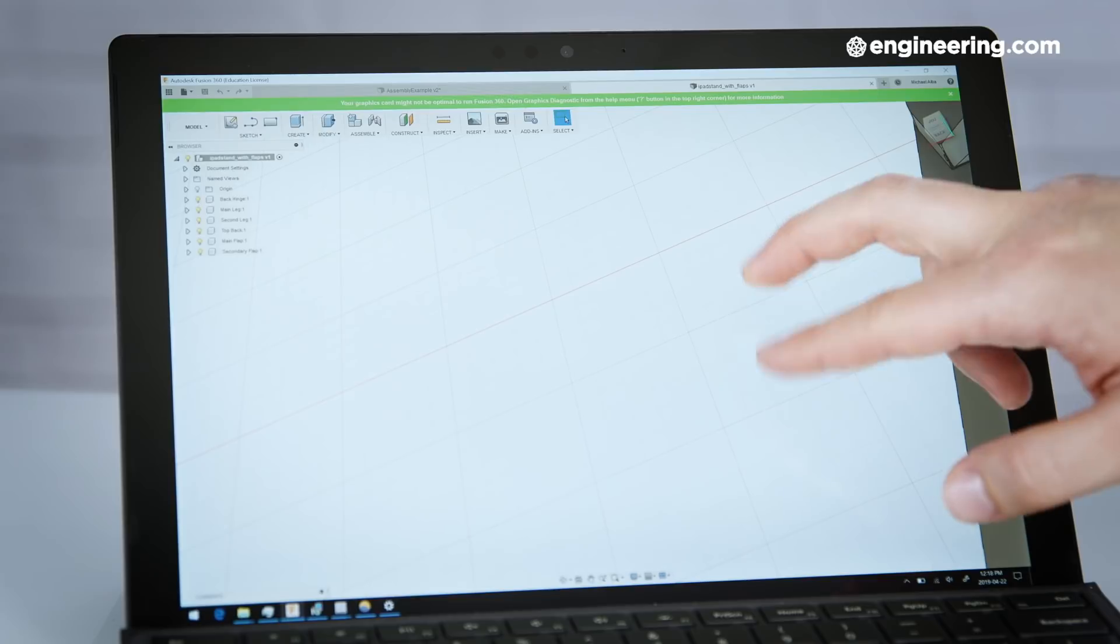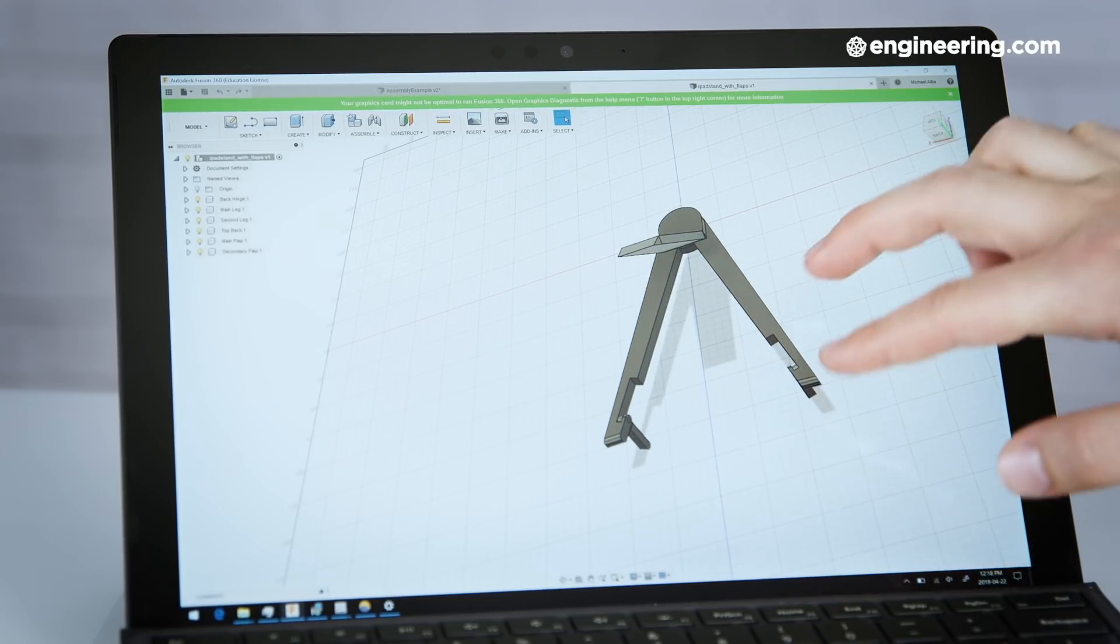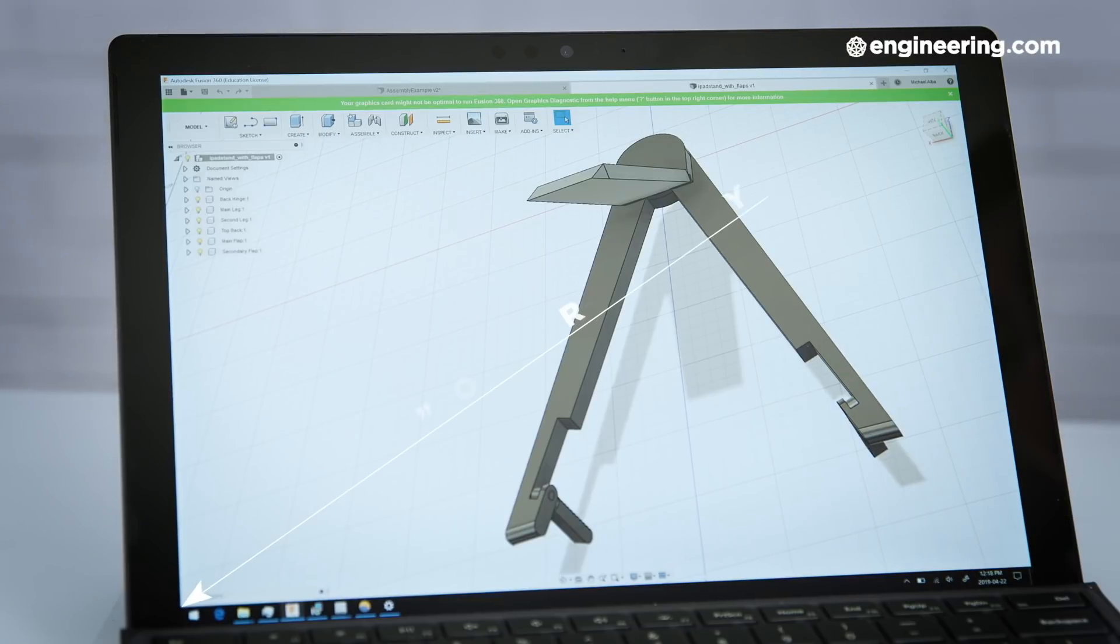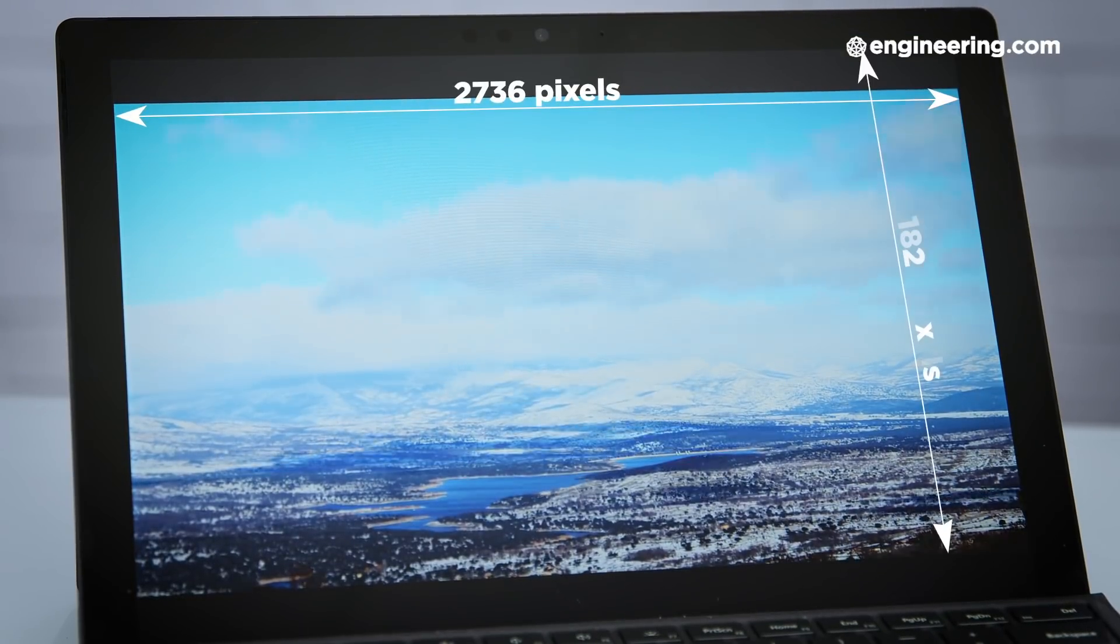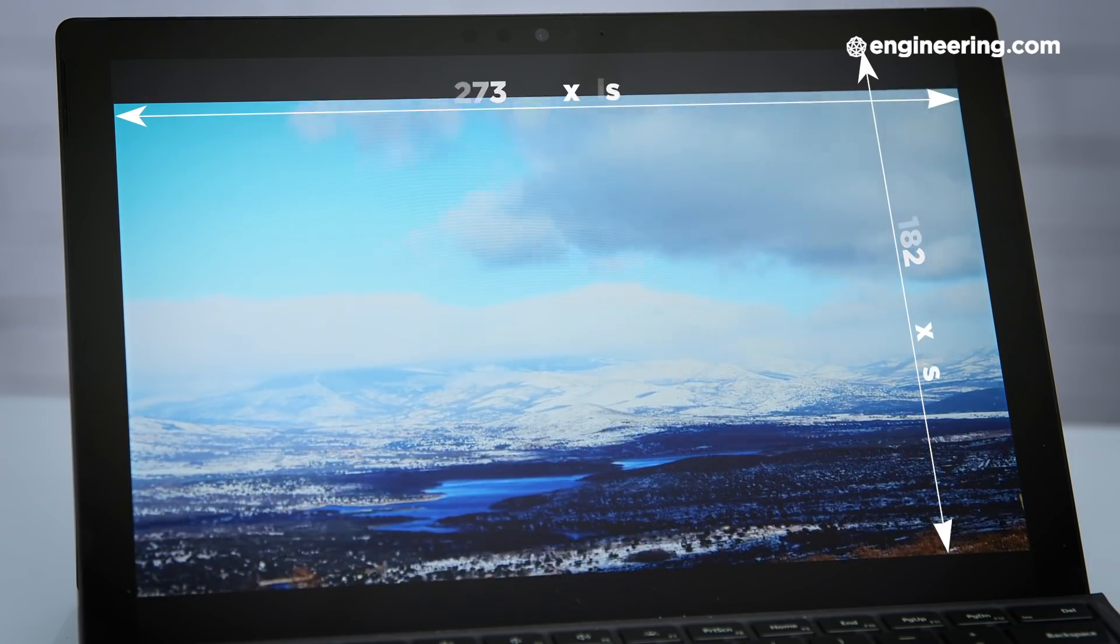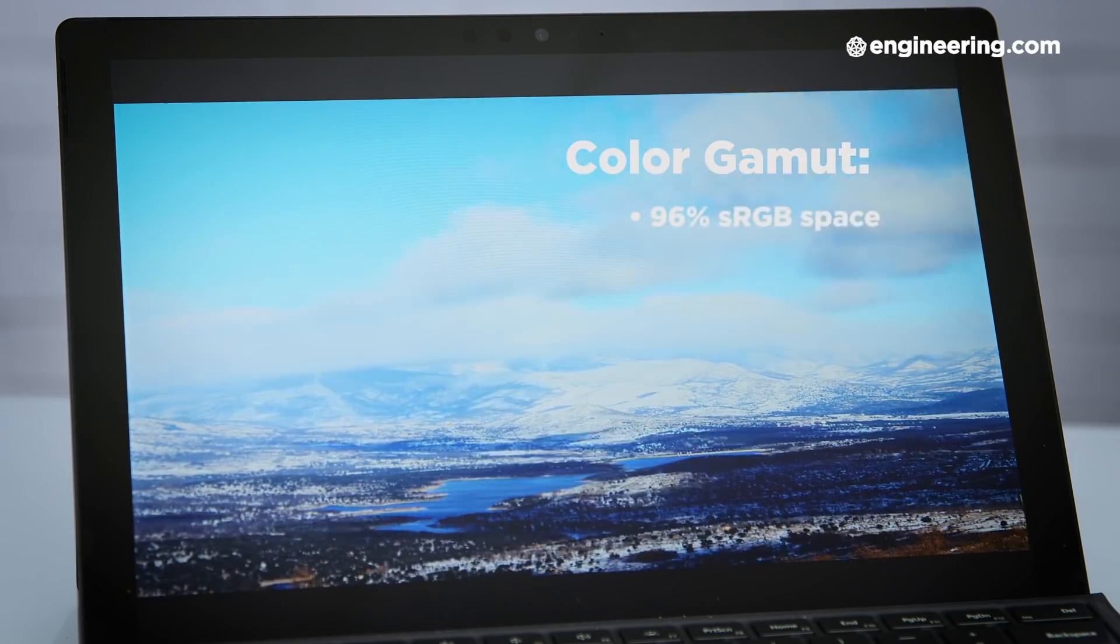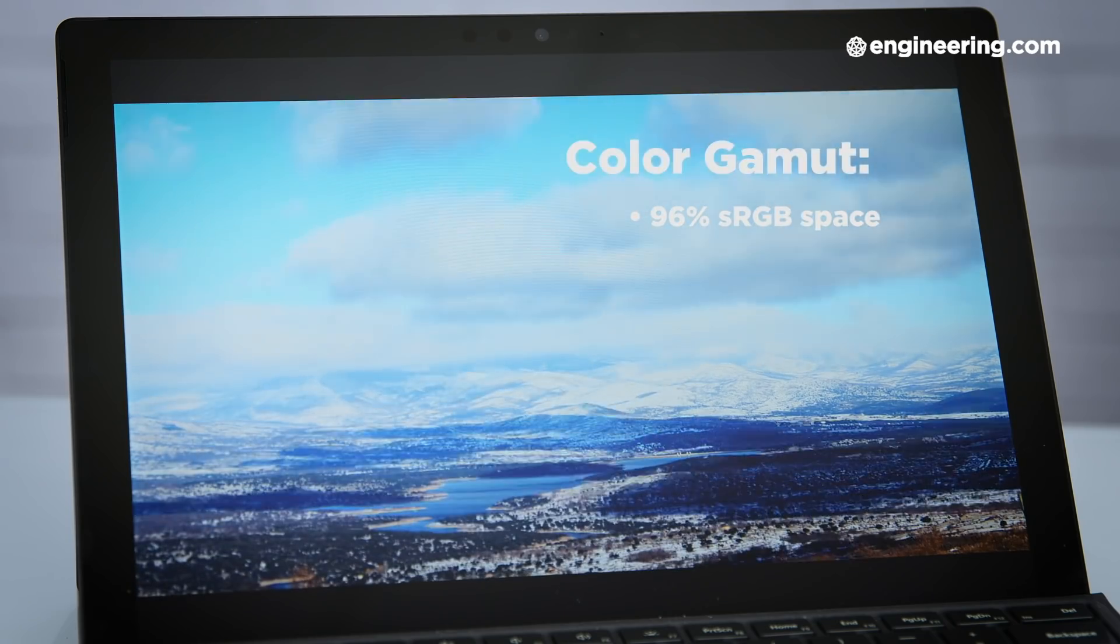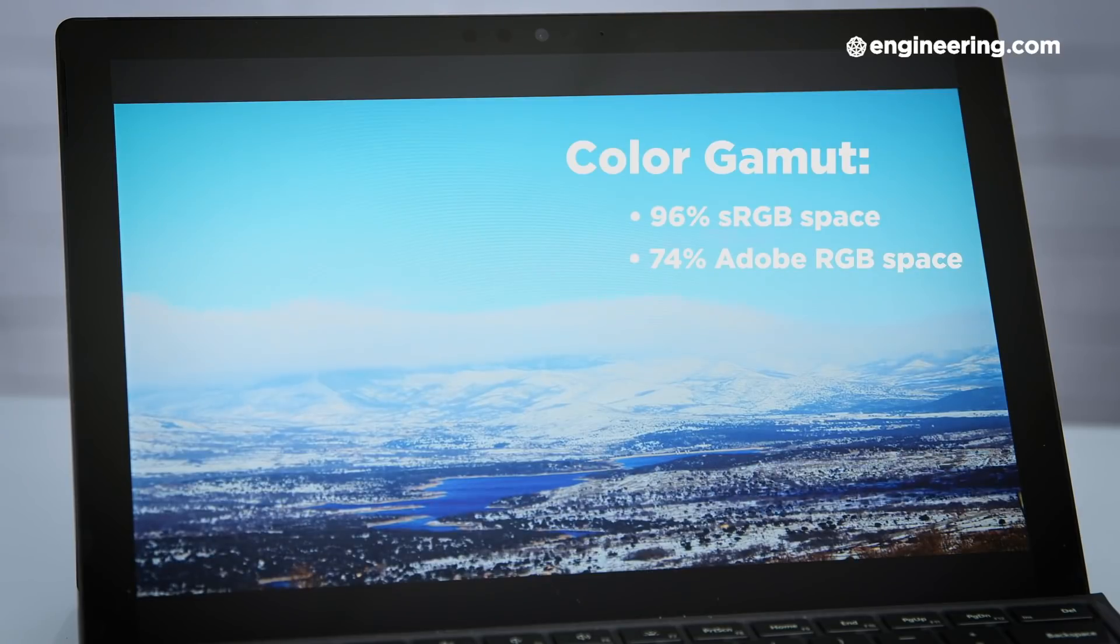The display on the SP6 is one of the disadvantages of the half-tablet form factor. To save on bulk, the screen is necessarily on the smaller side, coming in at only 12.3 inches, so it's not a huge working space. The display itself is pretty sharp, with a resolution of 2736x1824 and a PPI of 267. It falls a bit flat on its color gamut, covering 96% of the sRGB color space and only 74% of Adobe RGB, but most users probably won't notice the deficiency.